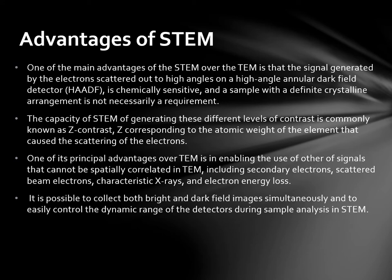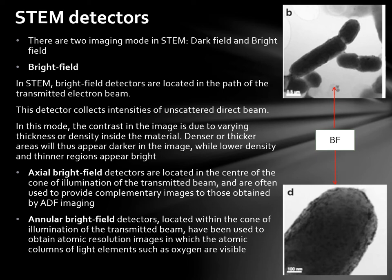There are two imaging modes in STEM: dark field and bright field. In STEM, bright field detectors are located in the path of the transmitted electron beam. This detector collects intensities of the unscattered direct beam. In this mode, the contrast in the image is due to varying thickness or density inside the material. Denser or thicker areas will thus appear darker in the image while lower density and thinner regions appear bright. Actual bright field detectors are located in the centre of the cone of illumination of the transmitted beam and are often used to provide complementary images to those obtained by ADF imaging. Annular bright field detectors located within the cone of illumination of the transmitted beam have been used to obtain atomic resolution images in which the atomic columns of light elements such as oxygen are visible.